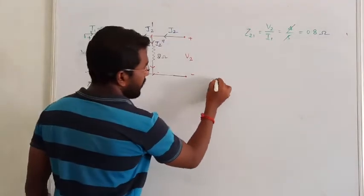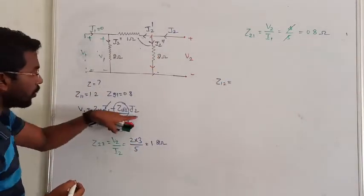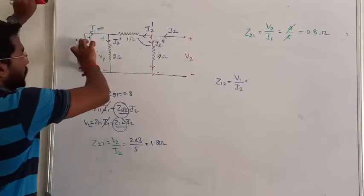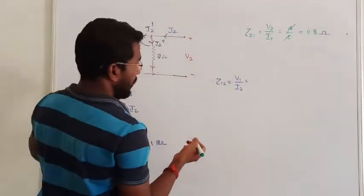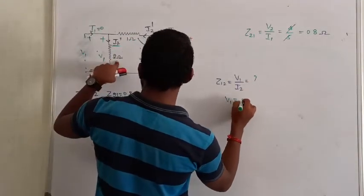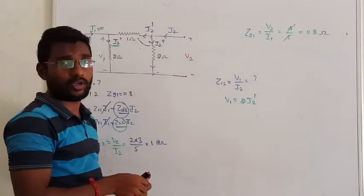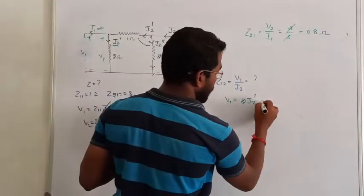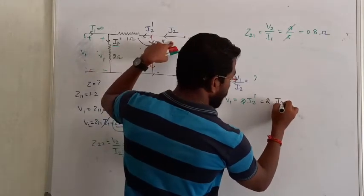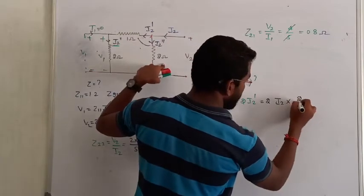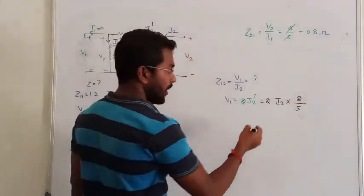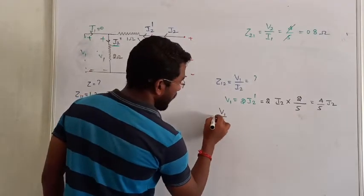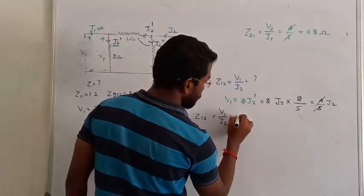In the same way we can get Z12. Z12 is V1 by I2. V1 is equal to 2 into I2 dash, not I2. Again we will use current division rule. Total current I2, current division is 2 into I2 dash. Total current I2 into opposite branch resistance, total resistance offered by the parallel branch. So again 4 by 5 into I2. V1 by I2, that is nothing but Z12, that should be equal to 0.8.